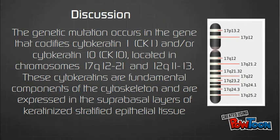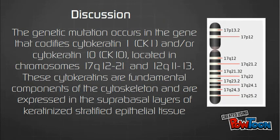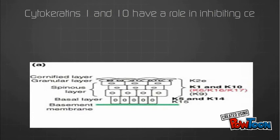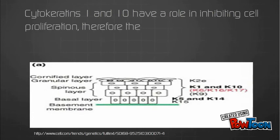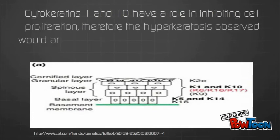EI involves mutations in CK1 (KRT1) and CK10 (KRT10), which are keratins 2-7 or 3-7 expressed in the suprabasal epithelial tissue. CK1 and CK10 are challenged, making the structural scaffolding of the skin fragile.